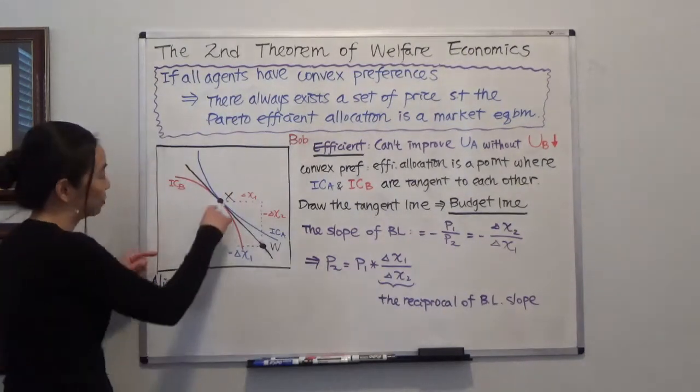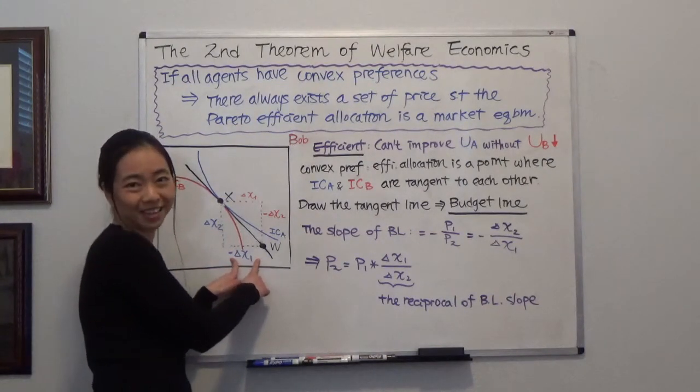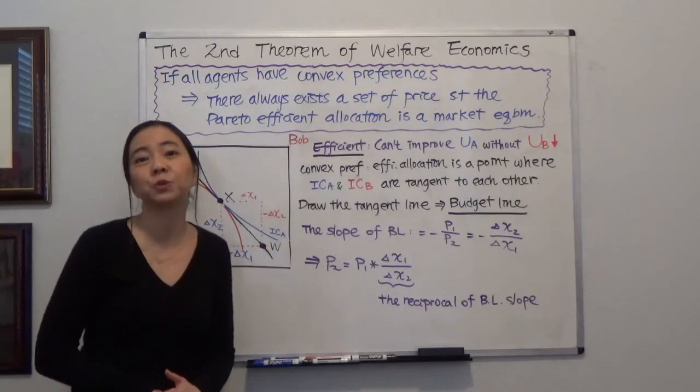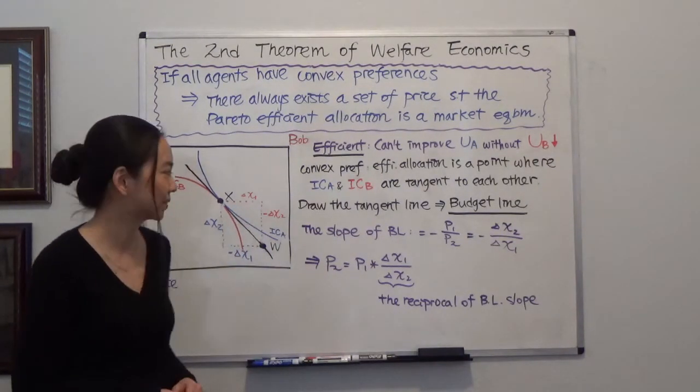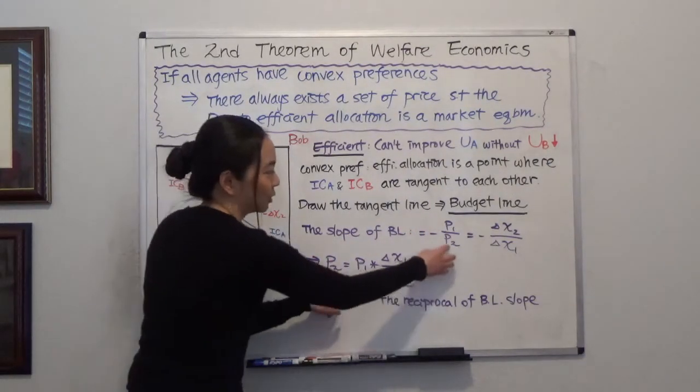And graphically, that will be delta x2 divided by delta x1. So that will be the amount of good two you're willing to give up in order to get one unit of good one.